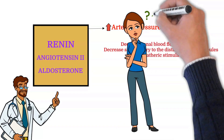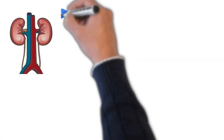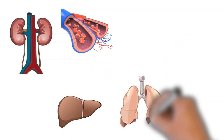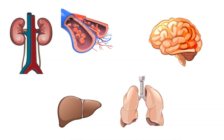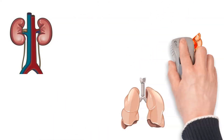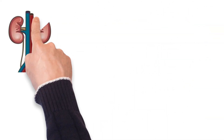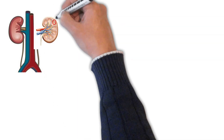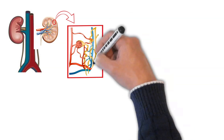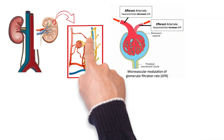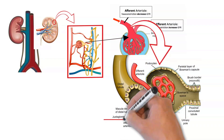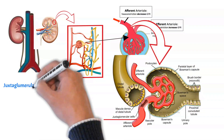So how does RAS work? The RAS involves the kidneys, systemic vasculature, liver, lungs, and the brain. Let's start in the kidneys. Within the kidneys, there are branches of small blood vessels entering the renal glomerulus. These small blood vessels are called afferent arterioles, where you can find specialized cells called juxtaglomerular cells.